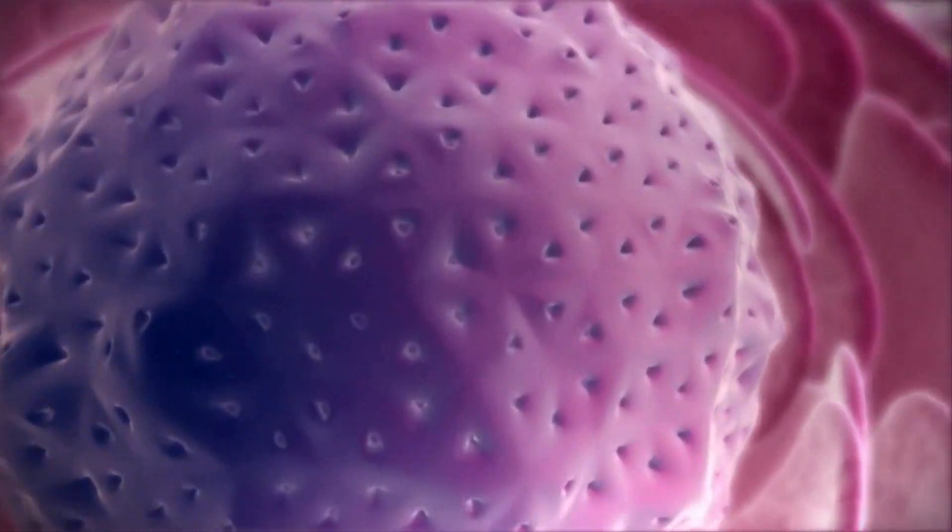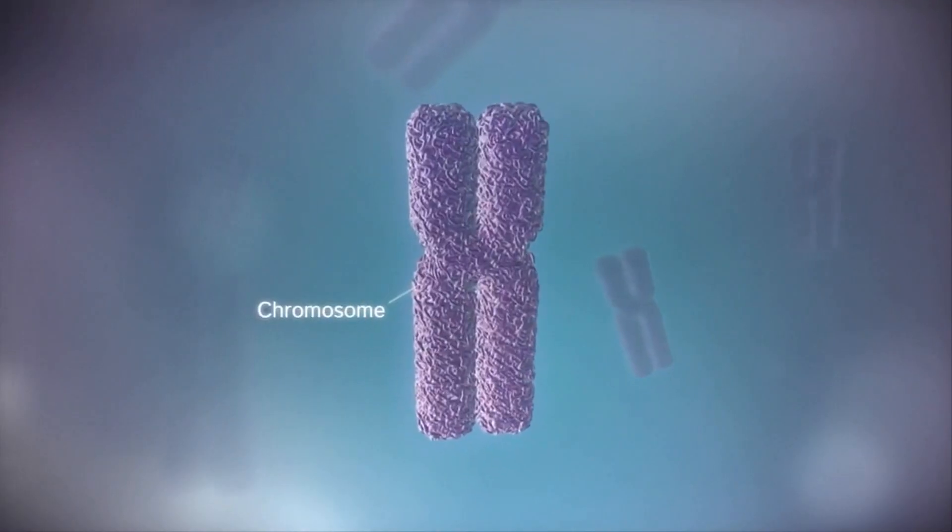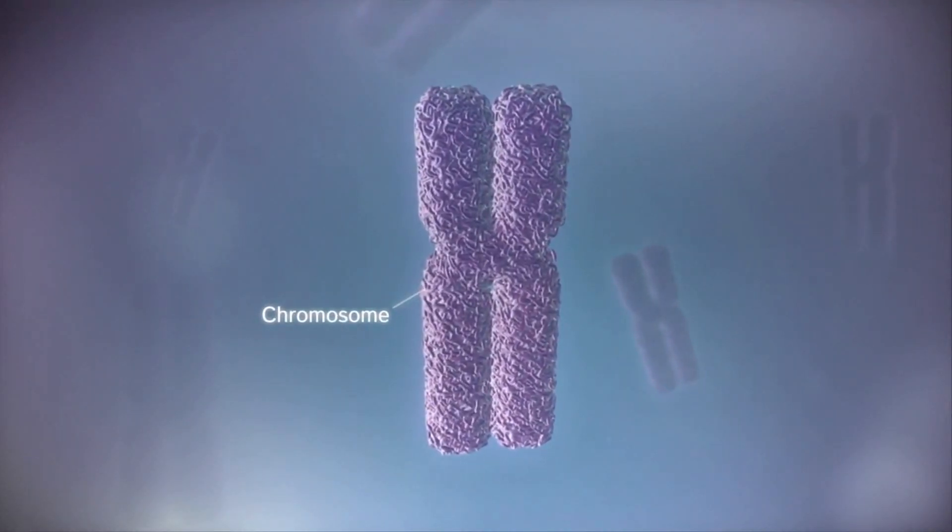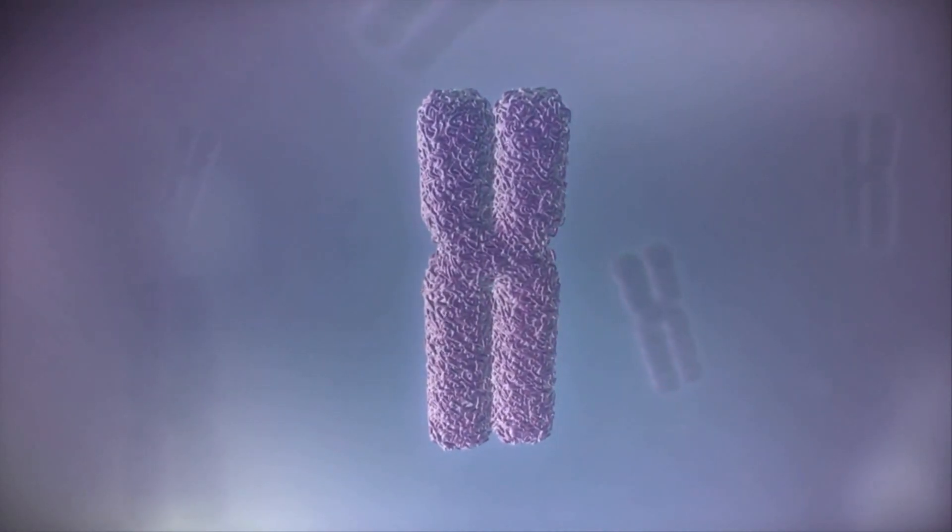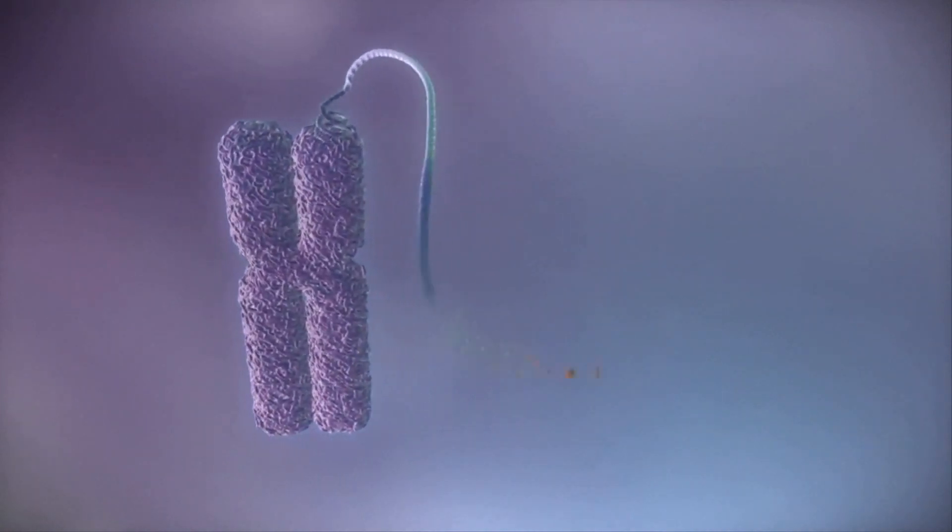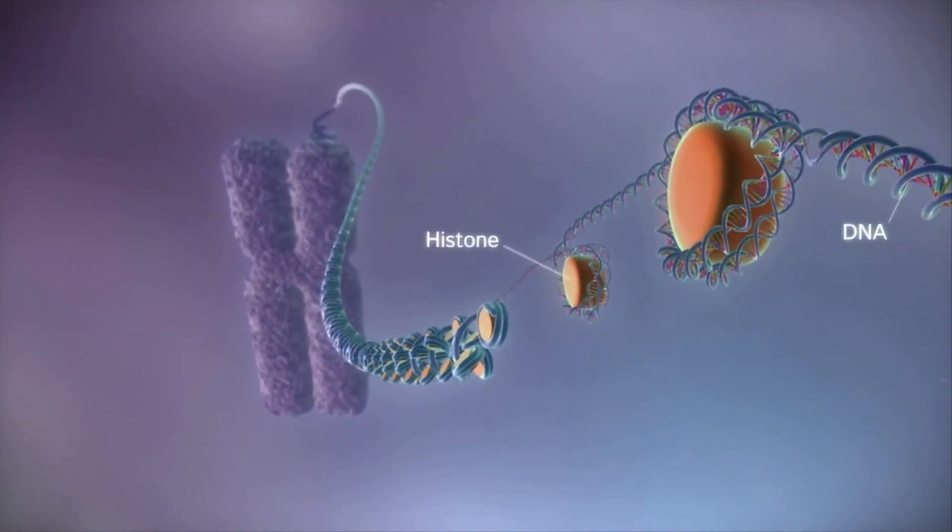In humans the genome is split between 23 pairs of chromosomes. Each chromosome contains a long strand of DNA, tightly packaged around proteins called histones.